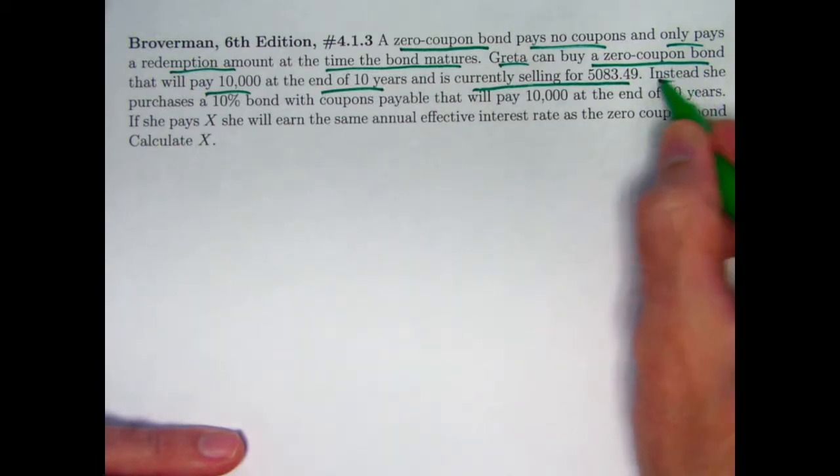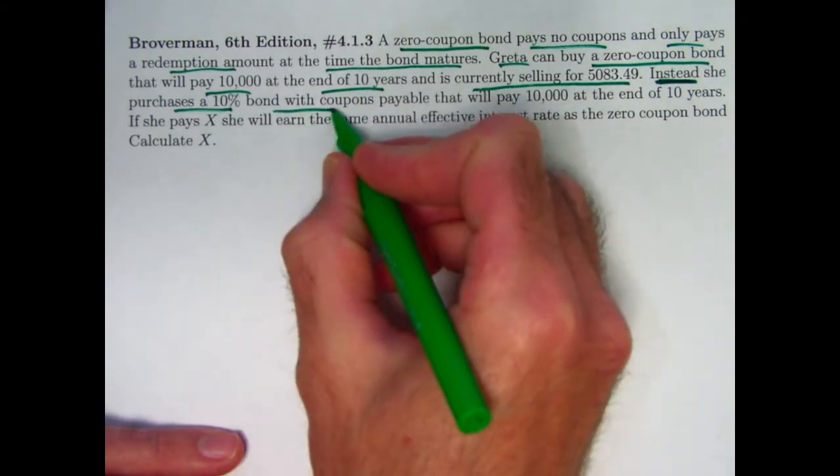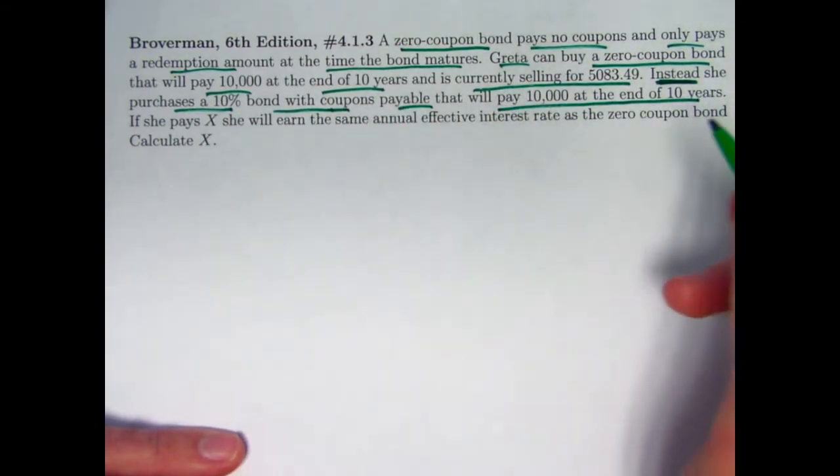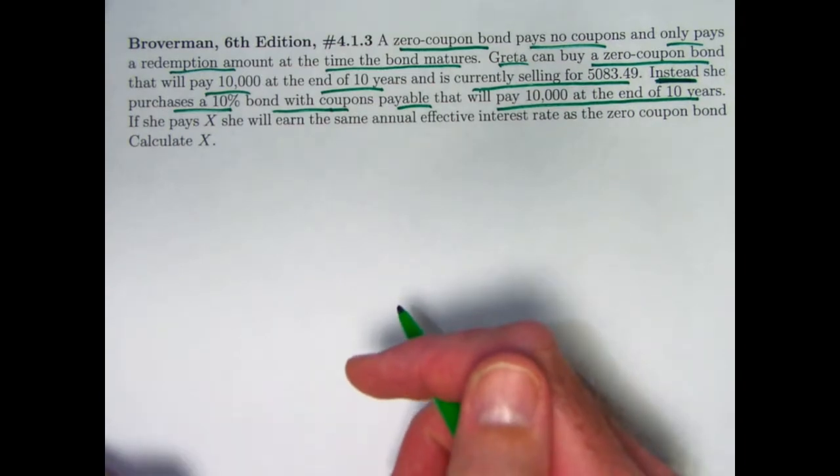Her second option is what she chooses. Instead, she does purchase a 10% bond with coupons payable that will pay $10,000 at the end of 10 years. Now, it doesn't say that the coupons are semi-annual, but remember I said in the last couple videos when it doesn't say you assume that they're semi-annual coupons. They're payable twice a year, every six months. That is the assumption here.